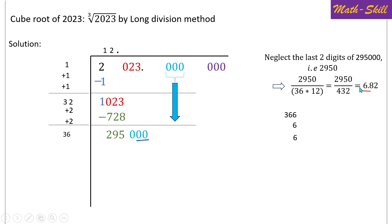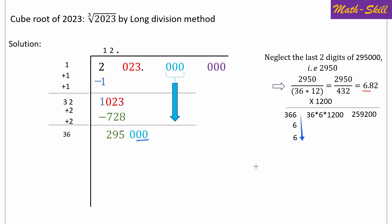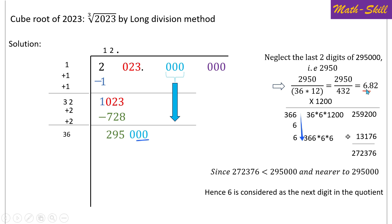Take the current divisor 36 and make it a three-digit number by appending trial digit 6, giving 366. Consider 6 twice. Multiply 36 × 6 × 1200 = 259200. Also multiply 366 × 6 × 6 = 13176. Adding 259200 + 13176 = 272376, which is less than 295000 and very close to it. Therefore, 6 can be considered as the next digit in the quotient.